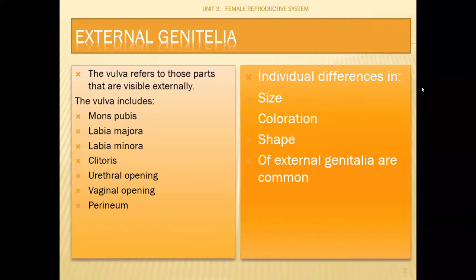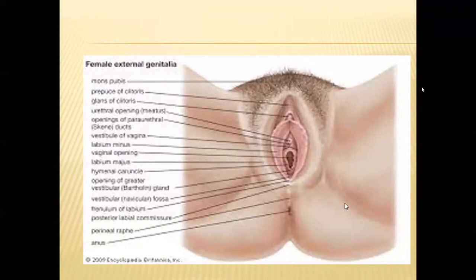The female reproductive system can be divided into external and internal genitalia. In external genitalia we have the vulva, which refers to those parts that are visible externally. The vulva includes mons pubis, labia majora, labia minora, clitoris, urethral opening, vaginal opening, and perineum. There can be individual differences in size, coloration, and shape of the external genitalia. This picture shows the external genitalia: mons pubis, labia majora, labia minora, clitoris, the vulval opening (vaginal opening), and the urethral orifice.